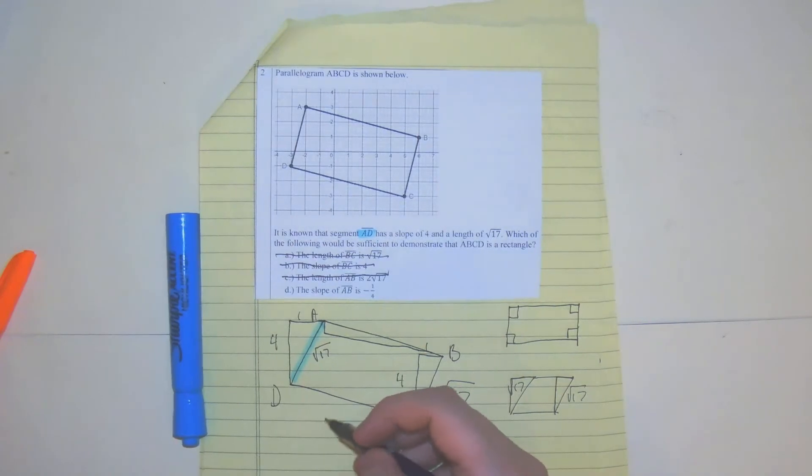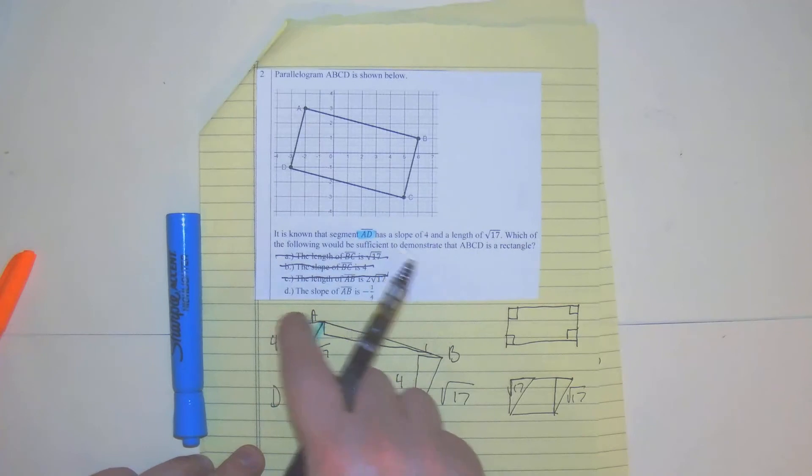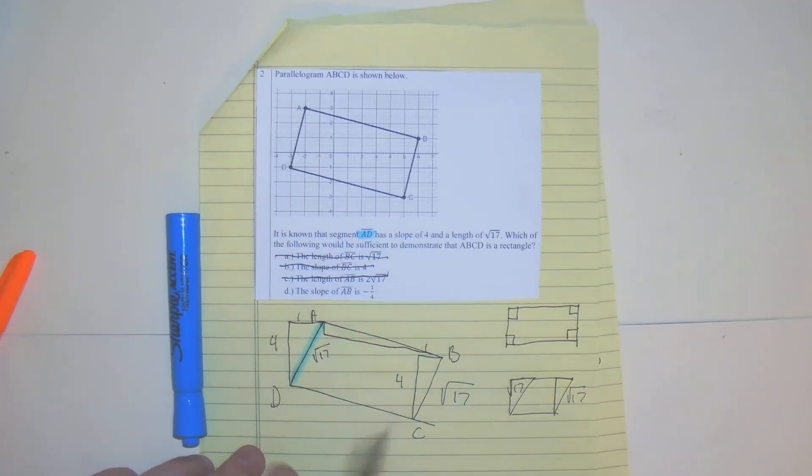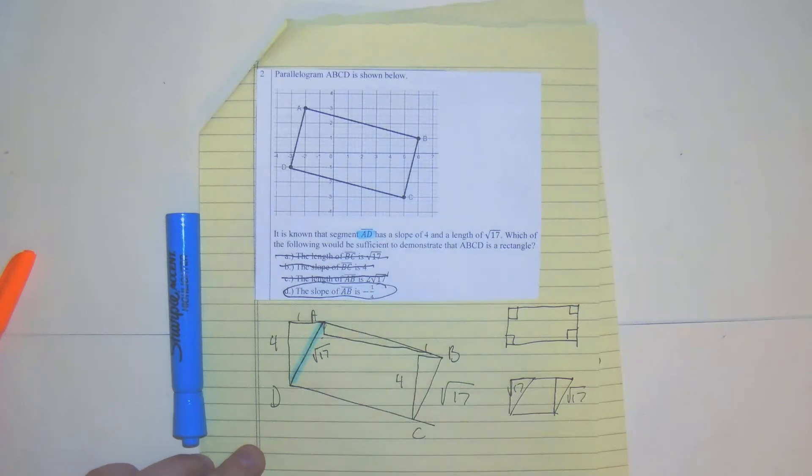Well, let's look at it. So if AD goes up four over one and the adjacent side is going to go down one over four, well, looks like the slopes are going to be perpendicular.